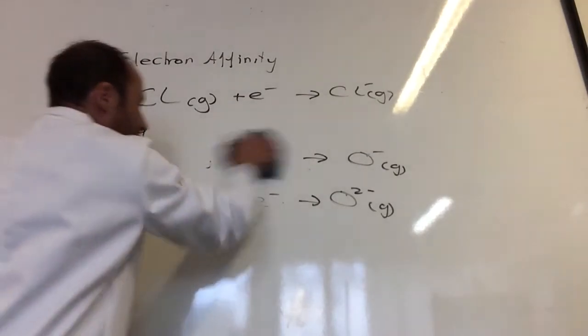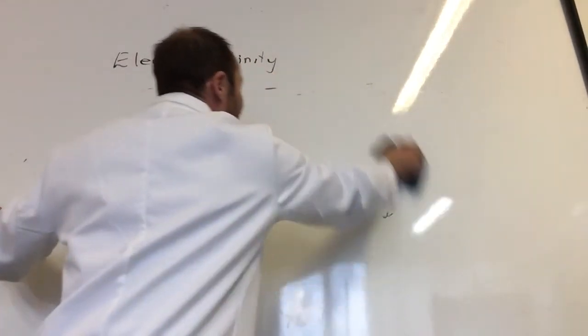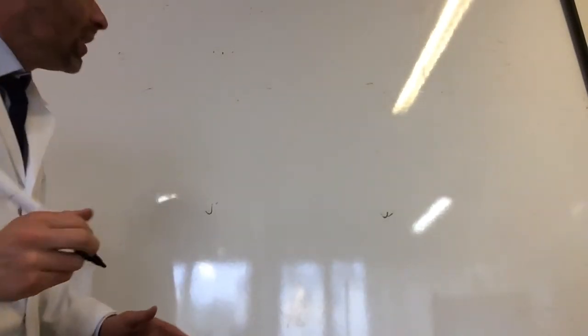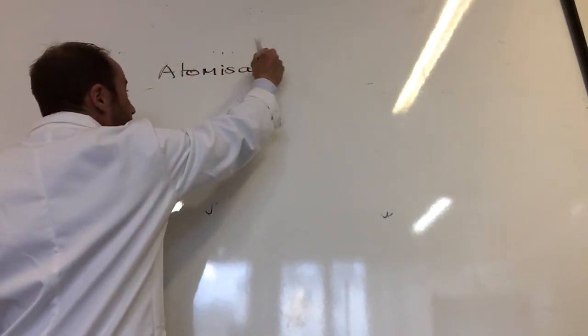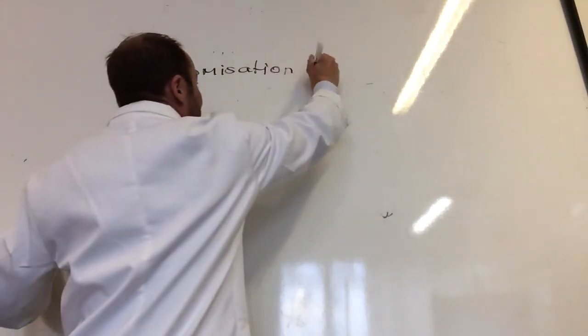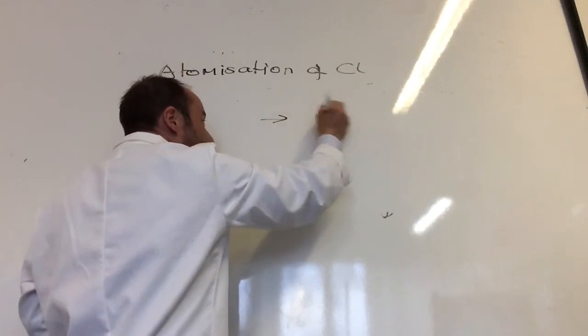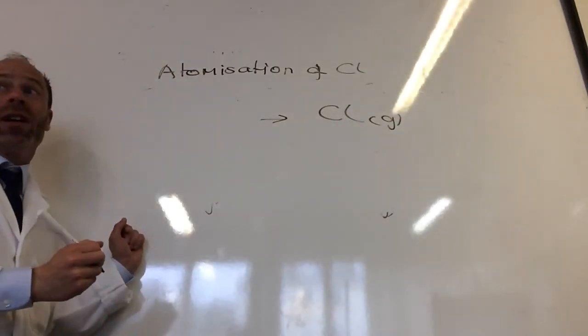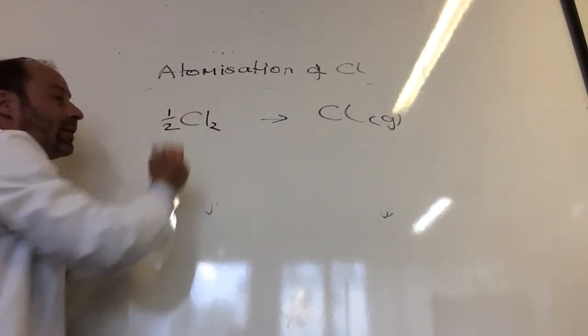You also need to know the standard entropy change of atomization. Atomization is formation of one mole of atoms in the gaseous state. So atomization of chlorine, what would I need to do? You'd have to split the Cl2s up. So I need to form one mole of gaseous chlorine atoms. In order to do that, I have to start with a half Cl2.